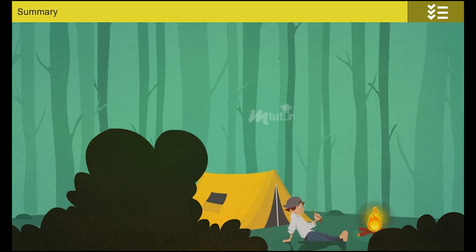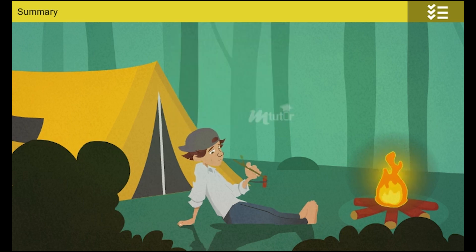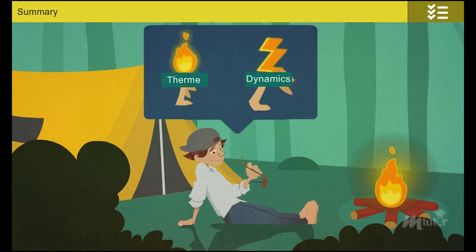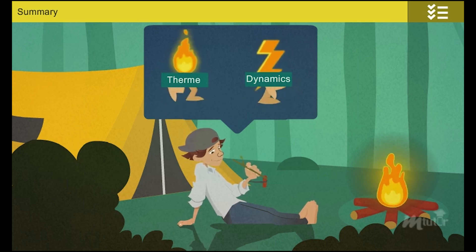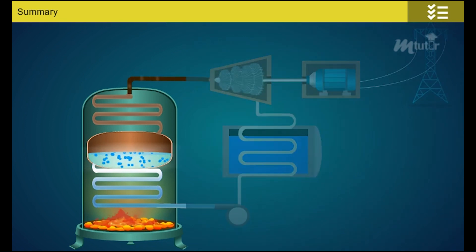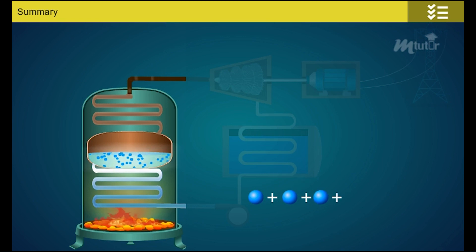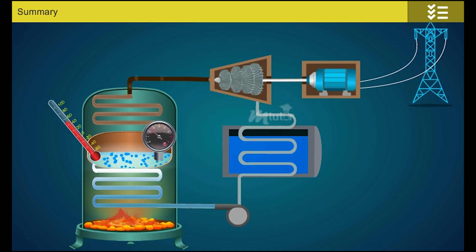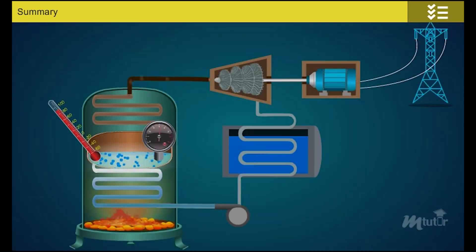Summary: In this lesson you have learned that thermodynamics is a branch of science which deals with relations among heat, energy, and the work done by heat energy. The microscopic approach describes matter by summing up values of each molecule — also called statistical thermodynamics. The macroscopic approach describes matter by the effect of many molecules — also called classical thermodynamics.